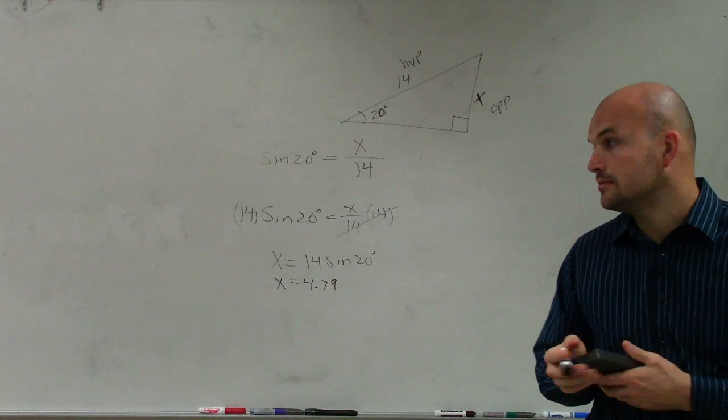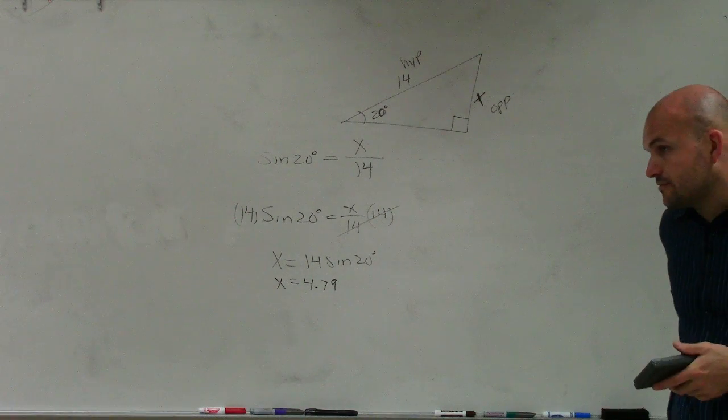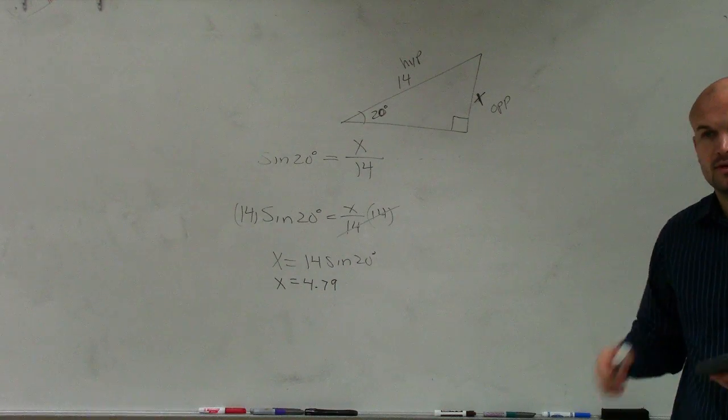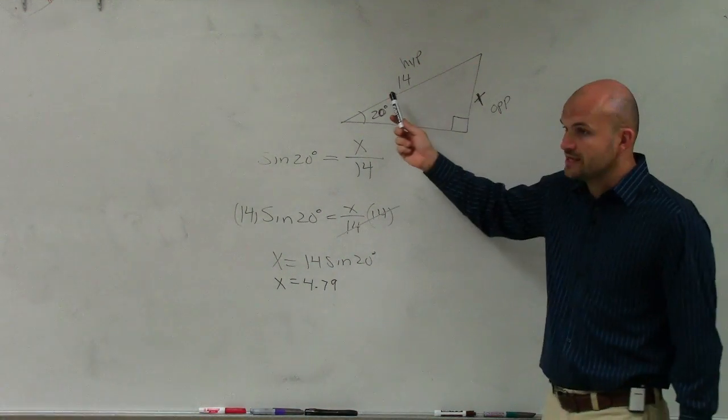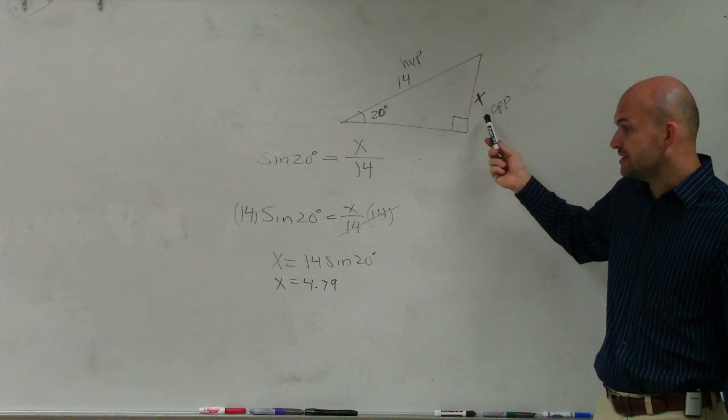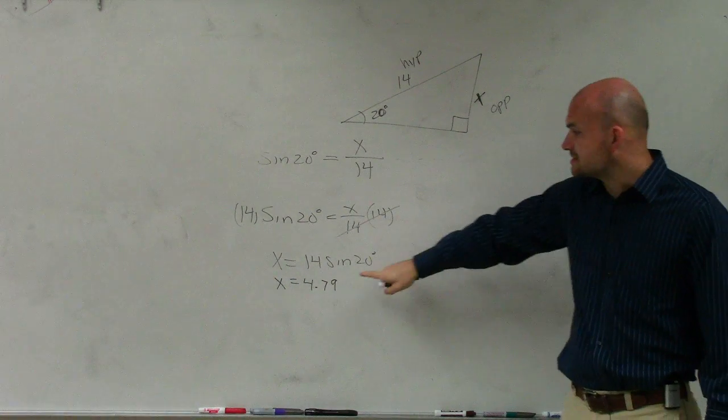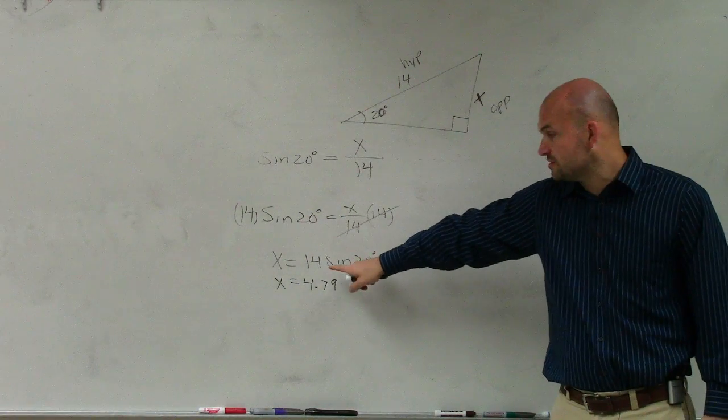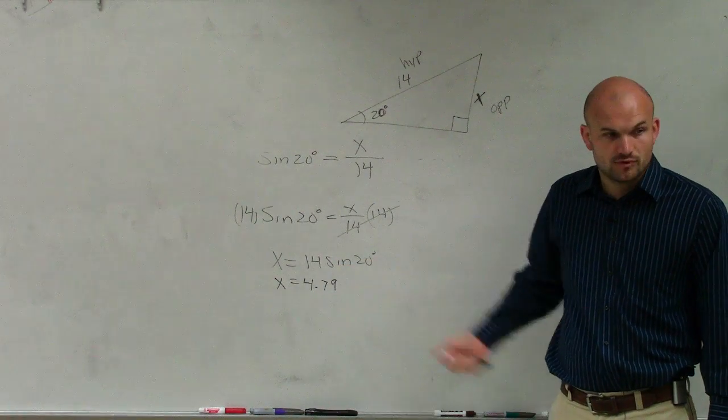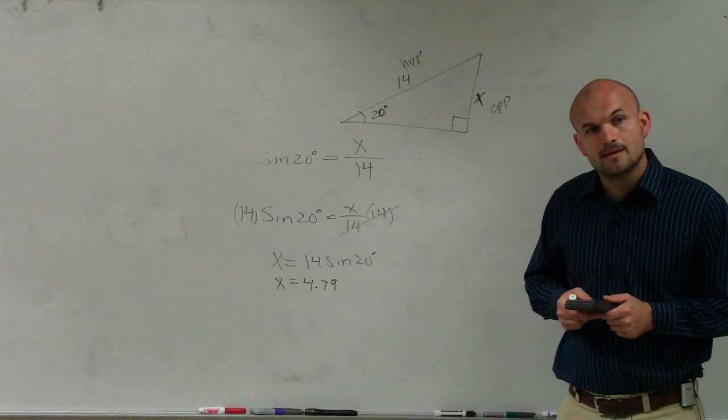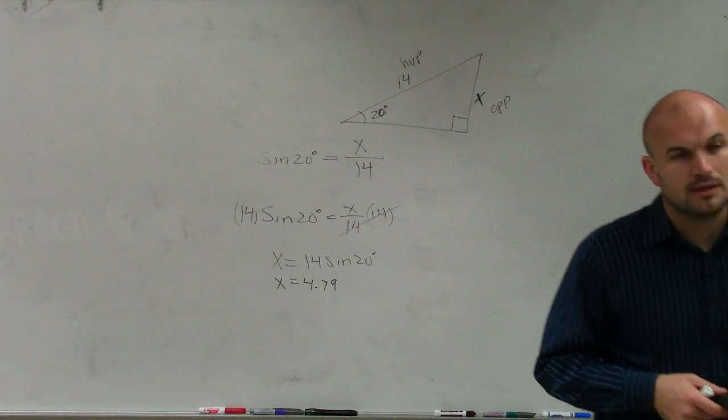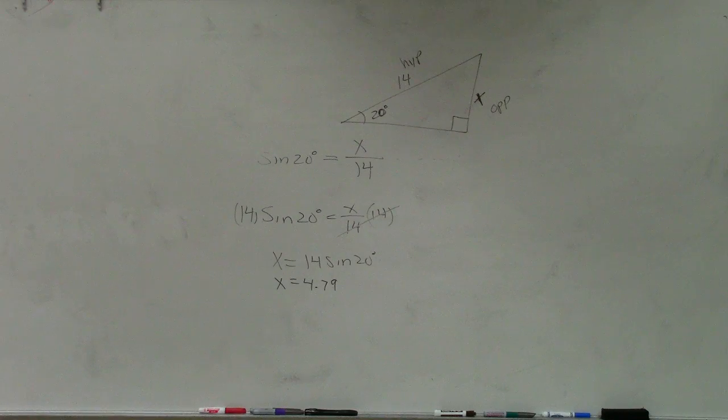4.79, we'll round to the hundredths. So if this is 14, this length is going to be 4.79. This is exactly what I typed in my calculator: 14 times the sine of 20 degrees.